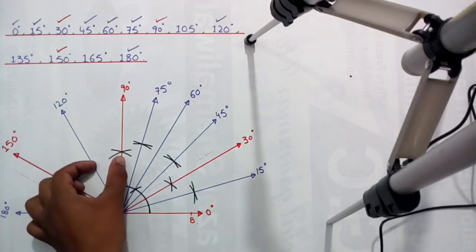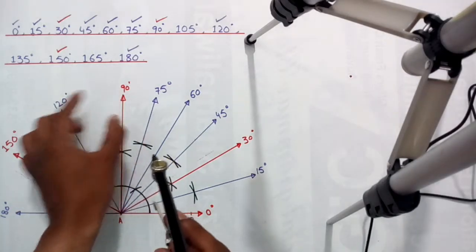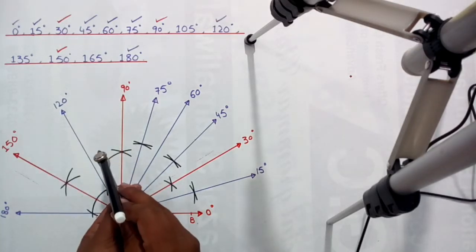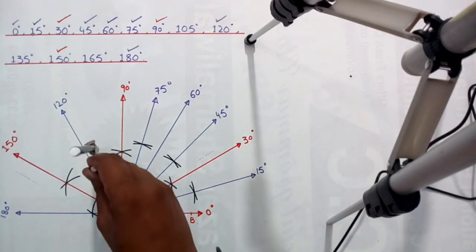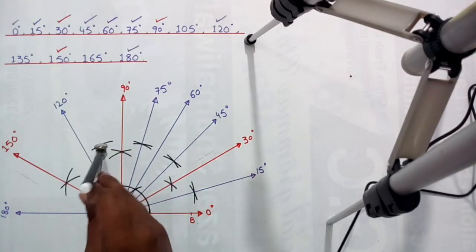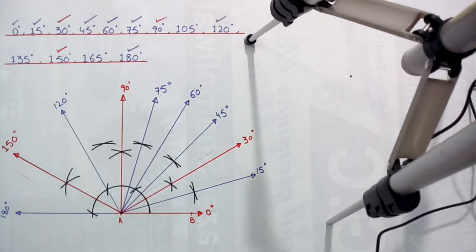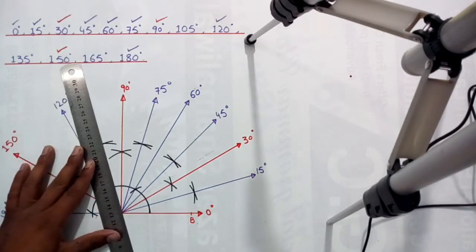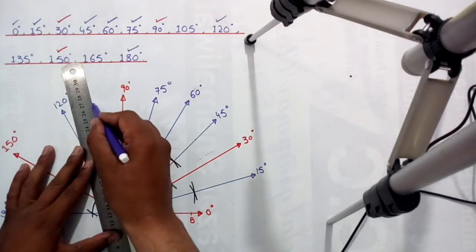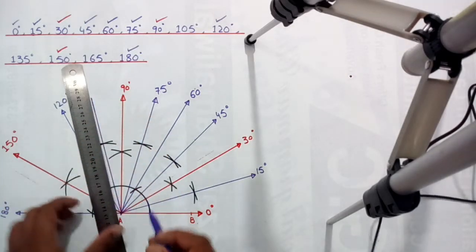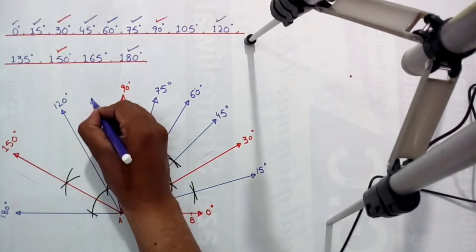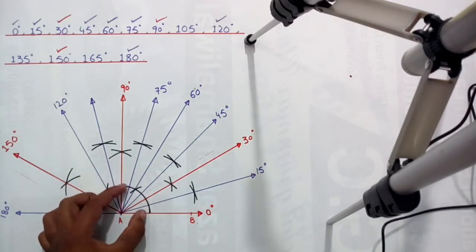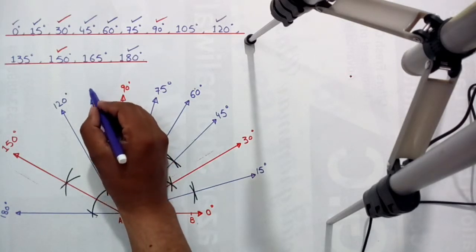Now we need to divide the angle between 90 and 120 — that is, 30 degrees — into two equal parts. Put the needle of the compass on this point and draw an arc, then draw a second arc. Join this point with the origin, point A. This gives 90 plus 15 which equals 105 degrees.